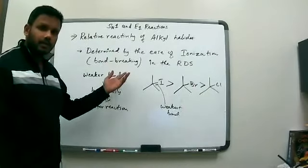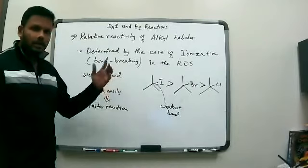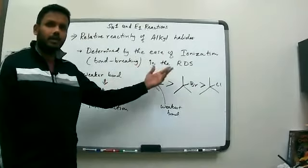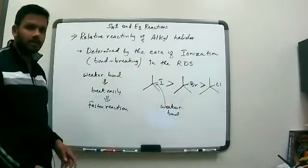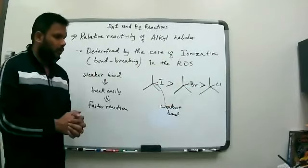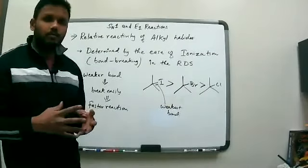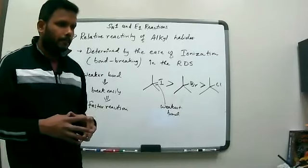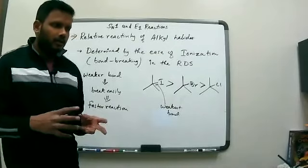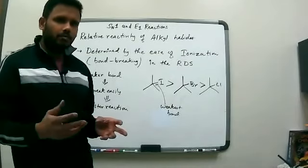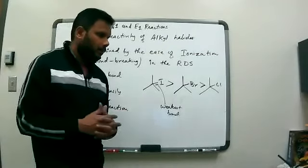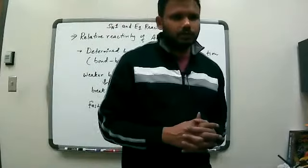Allylic and benzylic halides react faster than tertiary alkyl halides also, because those carbocations are resonance stabilized. That's something to keep in mind. That covers everything we want to cover in E1 and SN1. There's a little bit more to discuss in chapter seven — E2 and E1 reactions with molecules that behave like alkyl halides but are not alkyl halides. We'll discuss that in the next video.